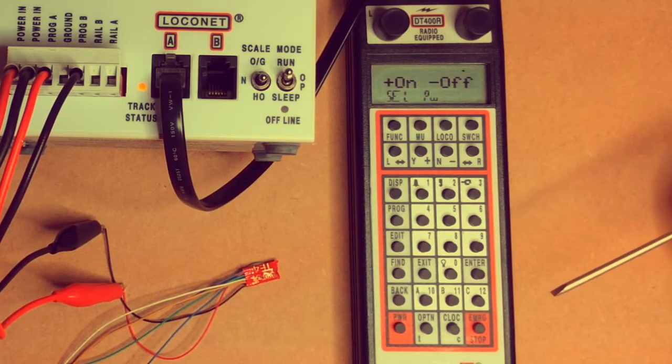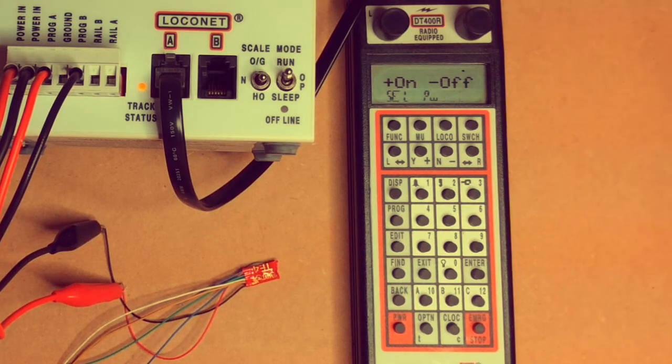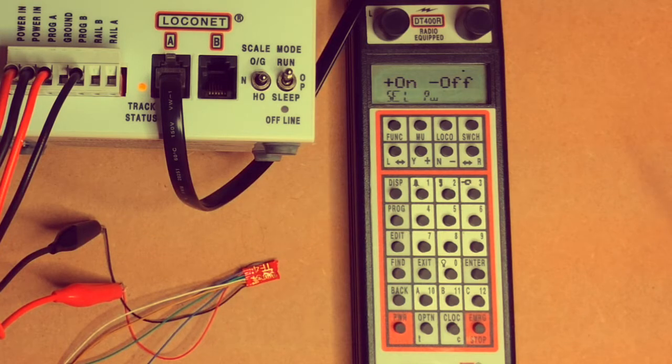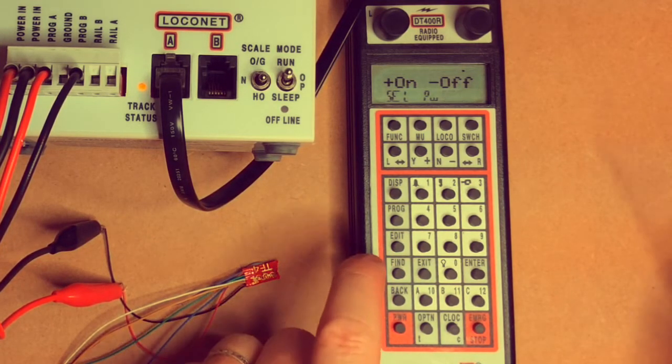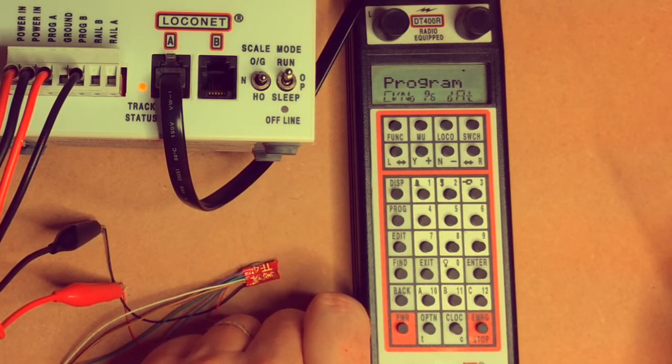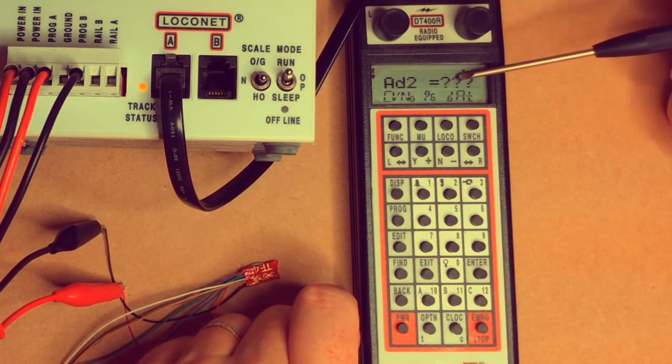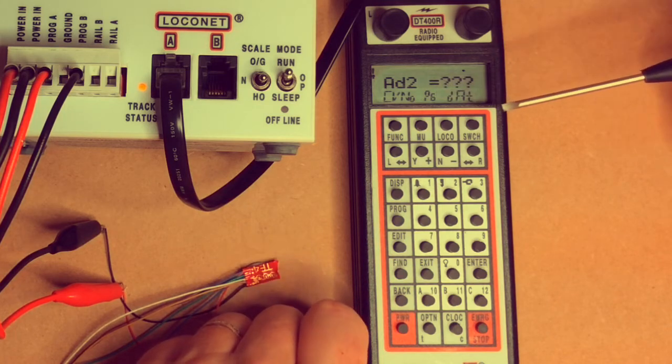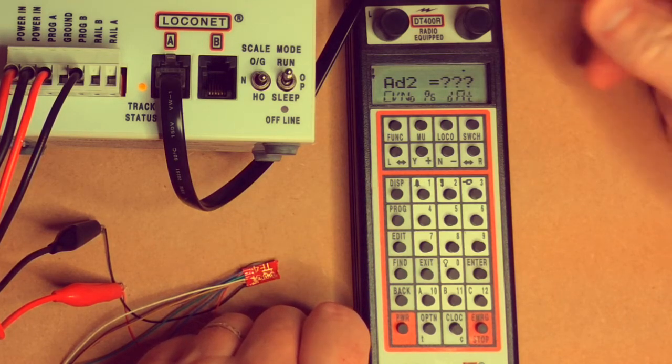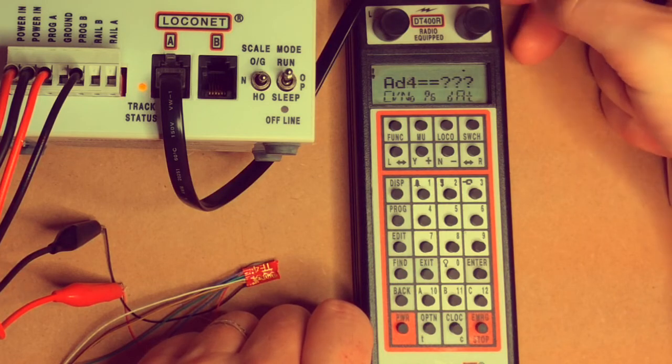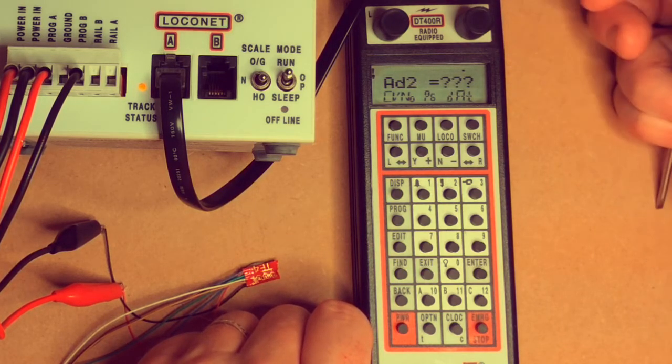The first thing we're going to do is read back the address on the decoder. As you've seen, I've pulled that one straight out of a bag. It should have, as per the instructions, address 003—a two-digit address. Let's check that out. We get to Program mode and you can see we've got Address 2 equals question marks. We're in PG or Page mode, the preferred mode for Digitrax. We want to read the Address 2 first.